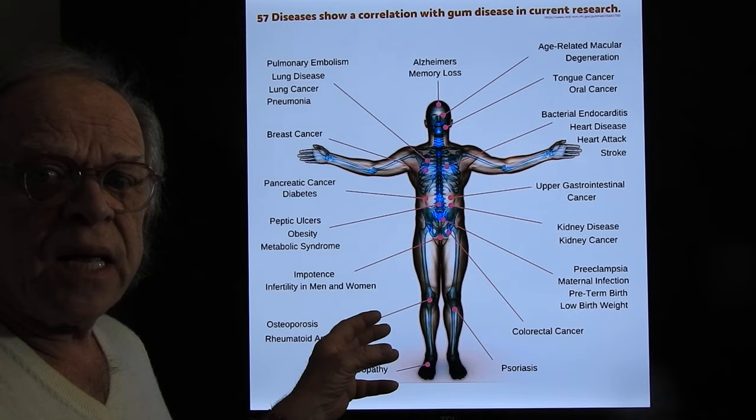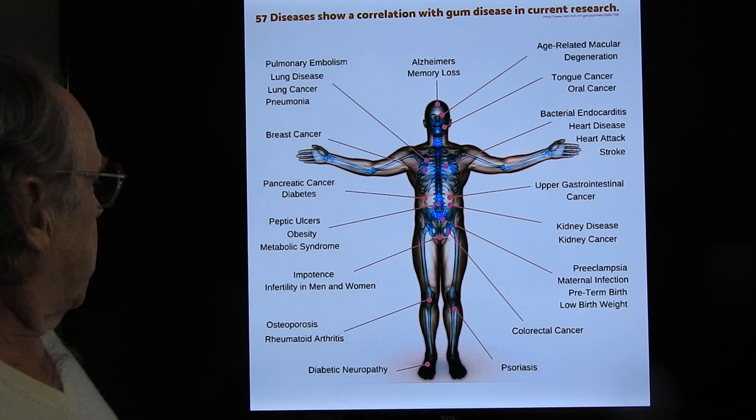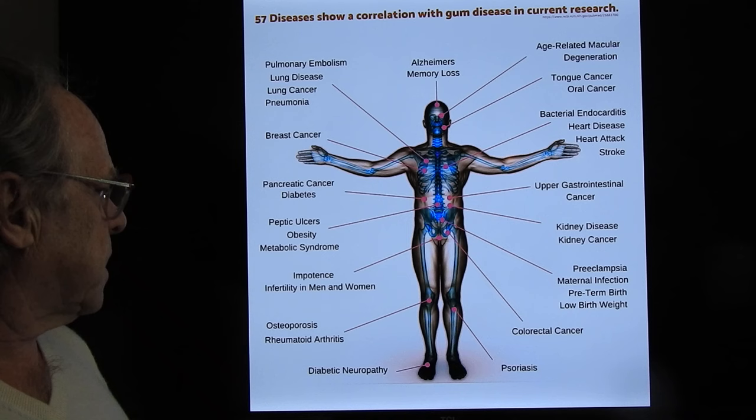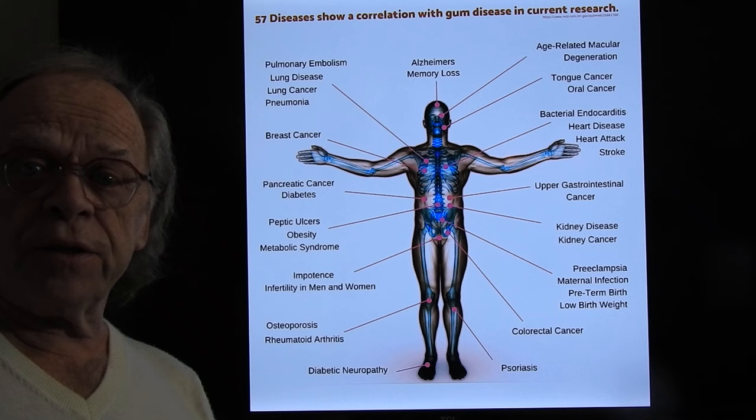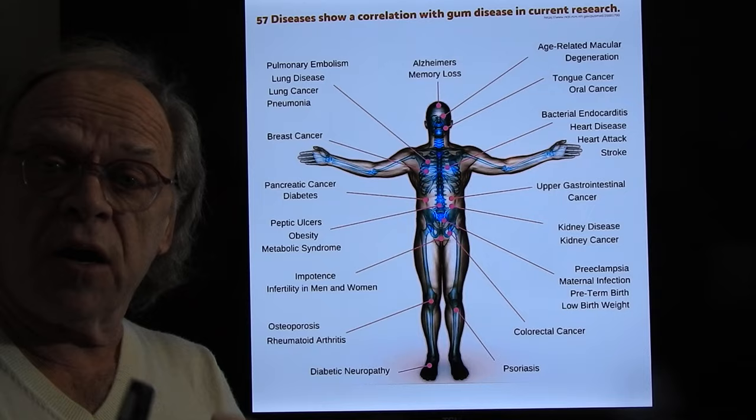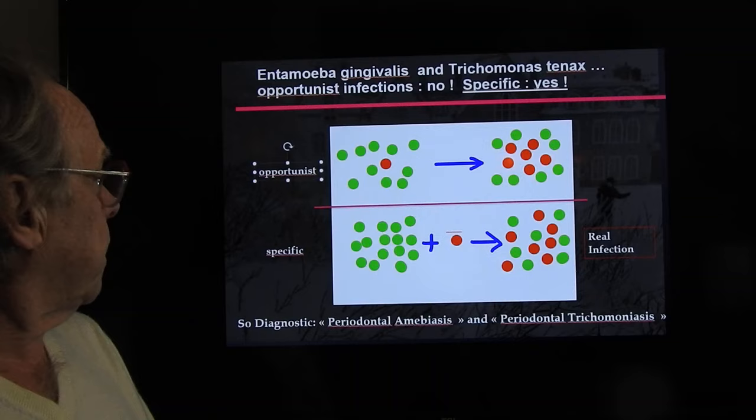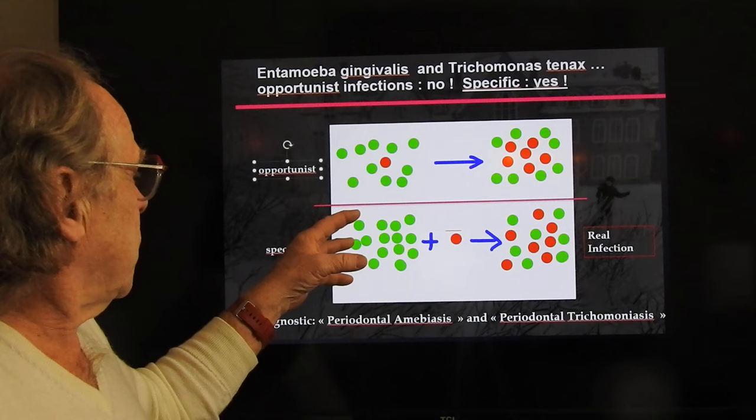Curing the disease is important because we know periodontal disease is related to many conditions: lung cancer, pneumonia, peptic ulcers, osteoporosis, rheumatoid arthritis, many forms of cancer. And for Alzheimer's disease — if you have periodontal disease, you have four to six times more risk of developing Alzheimer's. So it's better to be treated for this disease.